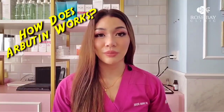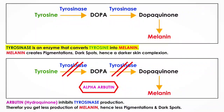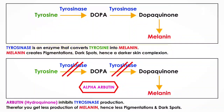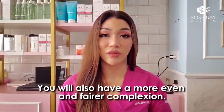This natural skin brightener works similarly to hydroquinone's mechanism, but it is less aggressive, so most clients prefer this one. How does Arbutin work? Arbutin, same as hydroquinone, inhibits tyrosinase production. Tyrosinase is an enzyme that is really important to convert tyrosine into melanin. So once this enzyme is inhibited, the conversion from tyrosine into melanin will be lesser — less melanin means less pigmentation, less dark spots, and you're going to have very even complexions.